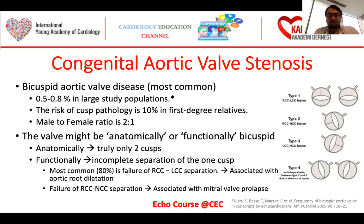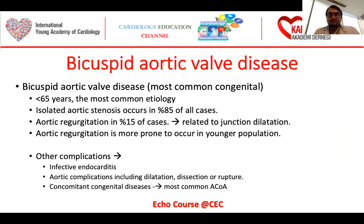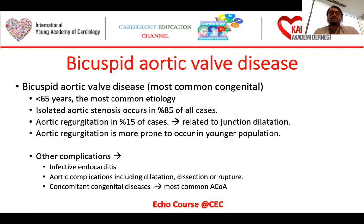If there is a separation problem in the right coronary cusp and non-coronary cusp, there is associated mitral valve prolapse in this type of separation malformation. As you can see on the right side of the slide, there is type 1, type 2, and type 3, and the most common is type 1. Bicuspid aortic valve disease is the most common congenital disease, and in patients less than 65 years old, it is the most common etiology for aortic valve stenosis. Isolated aortic stenosis is seen in 85% of all cases, and aortic regurgitation might be concomitant. Aortic regurgitation is more prone to occur in the younger population, and aortic stenosis mostly occurs in the older population — still under 65 years.